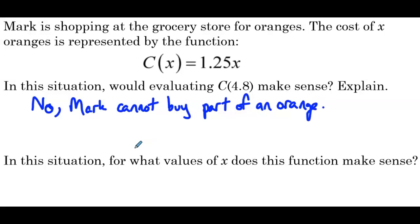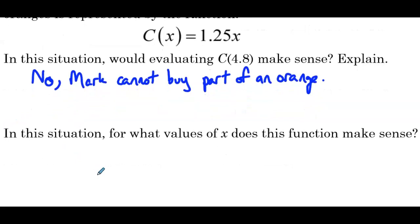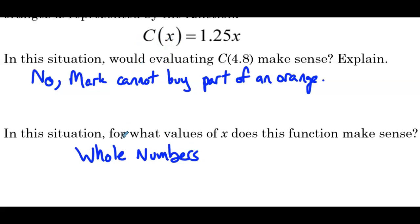For what values of x does this function make sense? What is a good domain for this function? Buying 0 oranges makes sense — he chooses not to buy any — or he buys 1, 2, 3, 4, and we can continue infinitely on. That set of numbers — 0, 1, 2, 3, 4 continuing on — is a set of whole numbers. So the whole numbers make the most sense as the domain of c of x. We don't want negative numbers, we don't want parts like 0.8. He's either going to buy an orange or he's not.